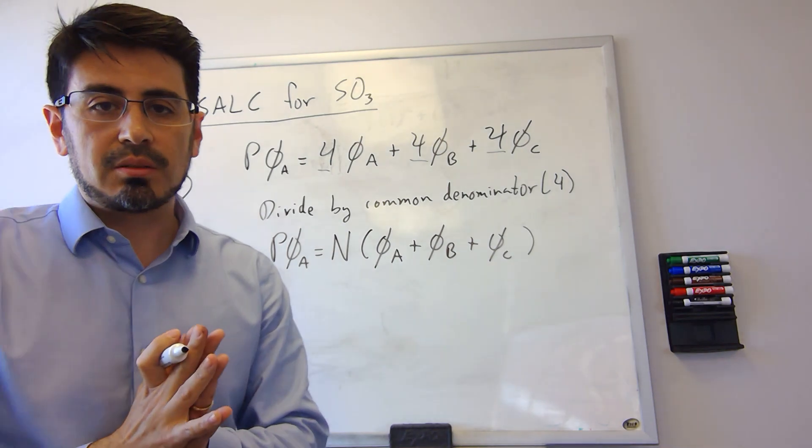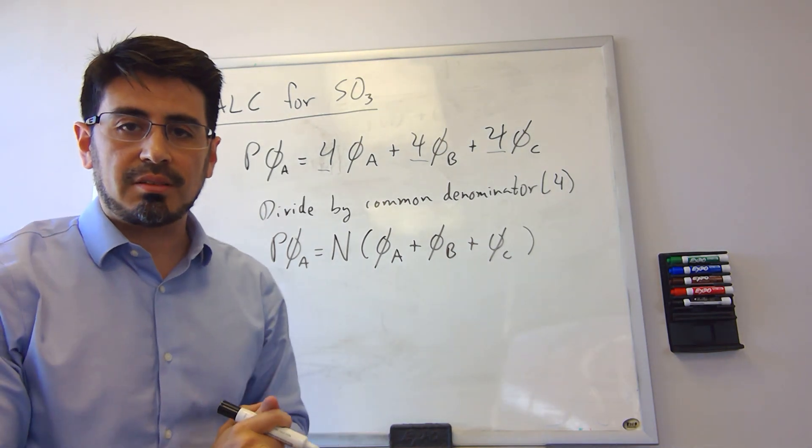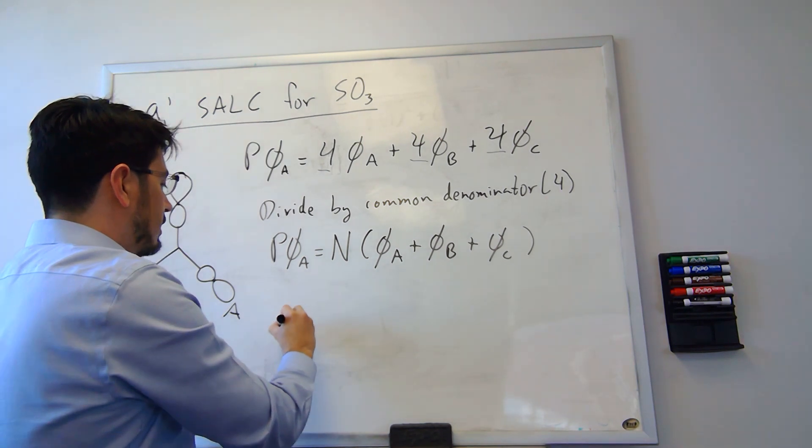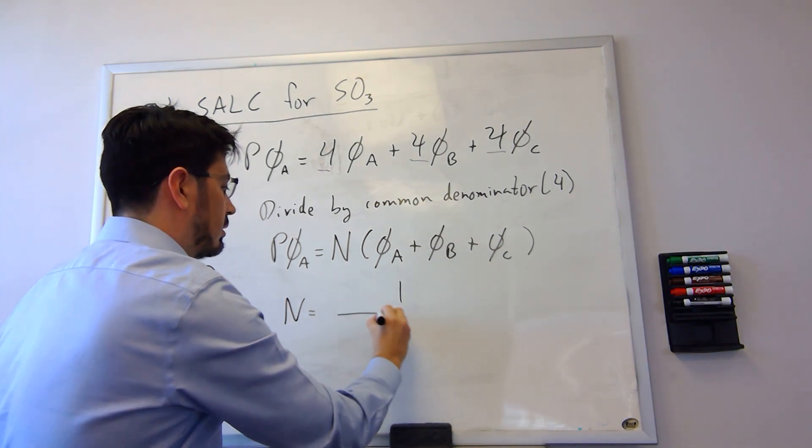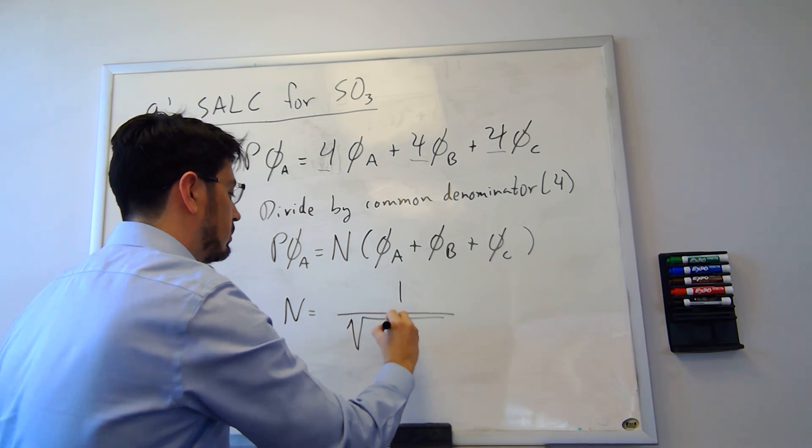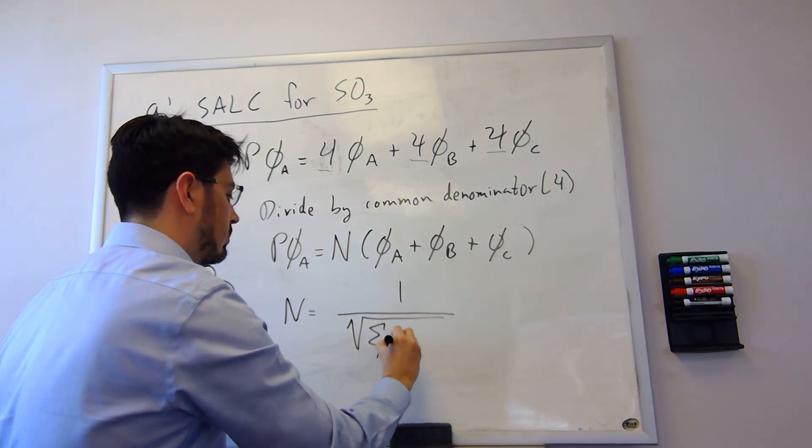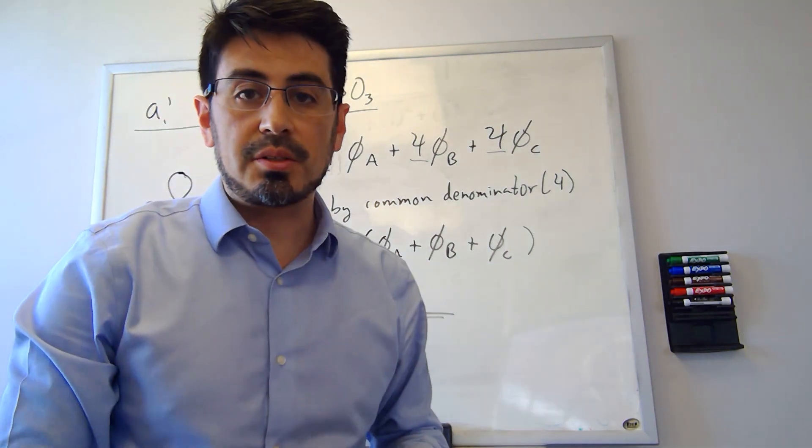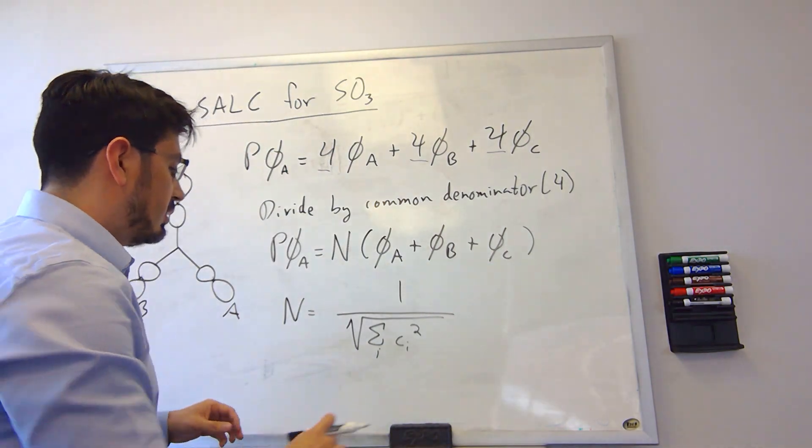Note that now we have to deal with finding that normalization constant in front of the wave function. And so the normalization constant is going to be equal to 1 over the root of the sum of the coefficient squared for each one of these here.